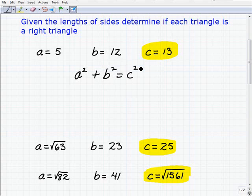Now if a squared plus b squared doesn't equal c squared, well, these cannot be the lengths of a right triangle. So let's go ahead and plug in the information.